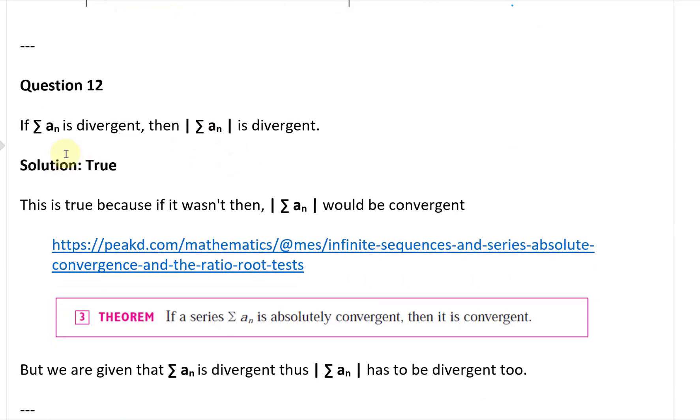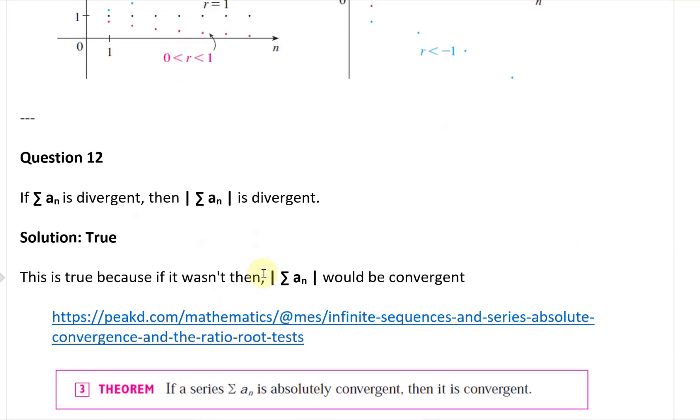All right, so let's take a look at the solution, and this is in fact true. This is true because if it wasn't, then the absolute value of this series right here, summation of aₙ, would be convergent.